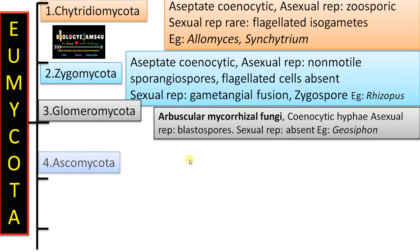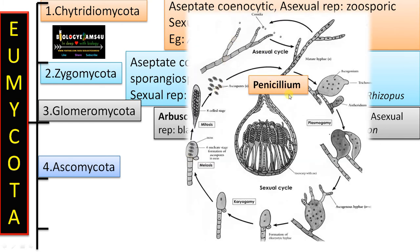The fourth phylum is Ascomycota, often called sac fungi. Penicillium belongs to this group. From here the hyphae is well-developed and septate, with anthridium and ascogonium as sex organs. Sexual spores are called ascospores, formed inside a sac-like structure called an ascus — that is why this fungus is called sac fungus. Often eight ascospores are formed inside each ascus. Different types of fruiting bodies are formed: a flask-shaped one called perithecium with an opening called ostiole, a cup-shaped one called apothecium, and a closed one called cleistothecium.